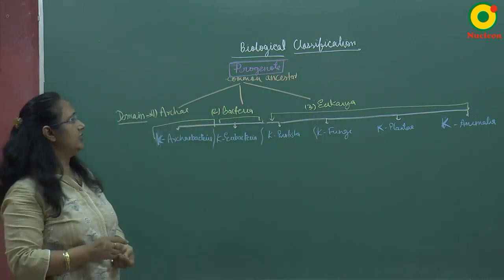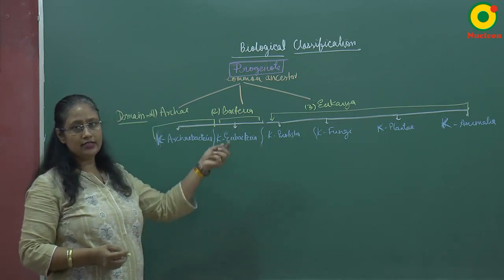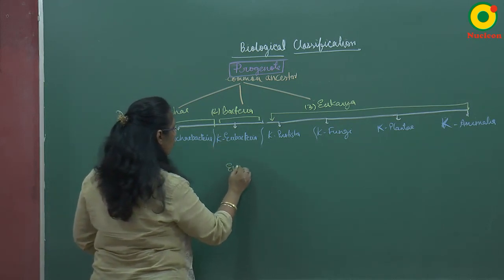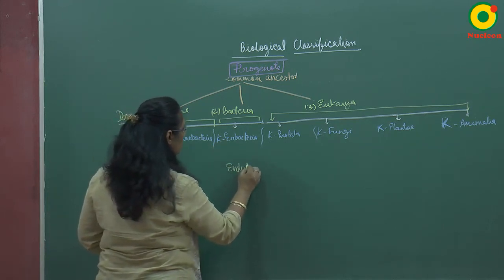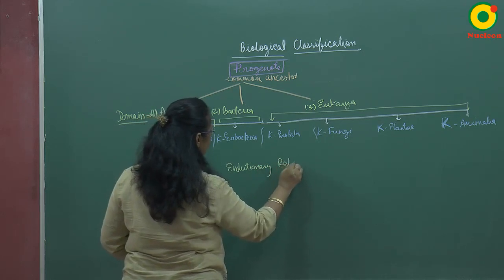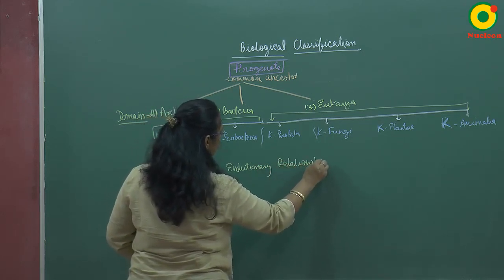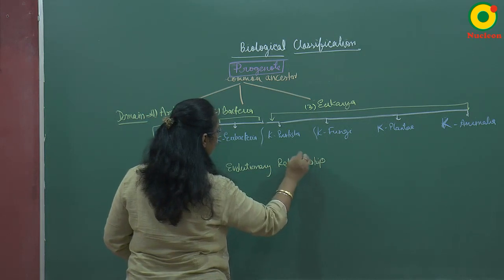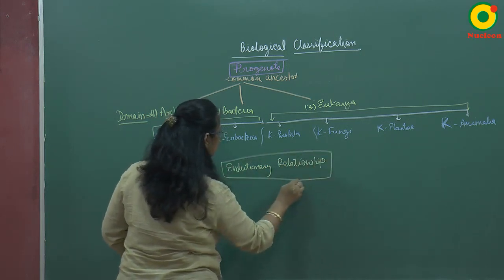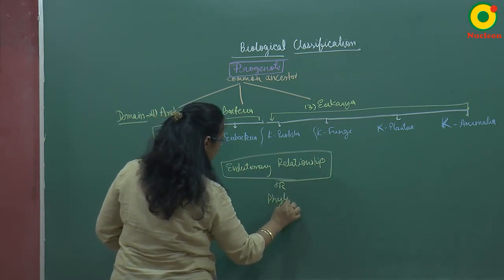Just like Whittaker's classification system, this classification system by Carl Woese is also based on evolutionary relationships and includes phylogeny.